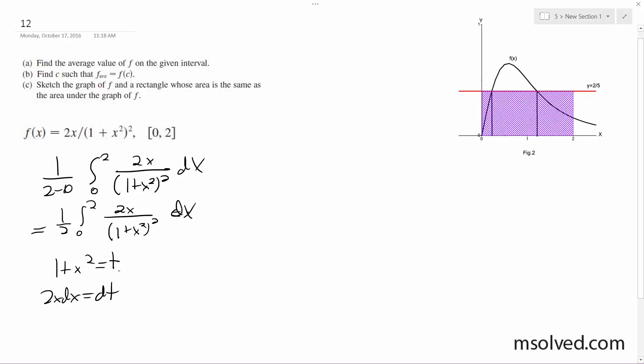When x equals 0, we make t equal to 1. And when x equals 2, we make t equal to 5.